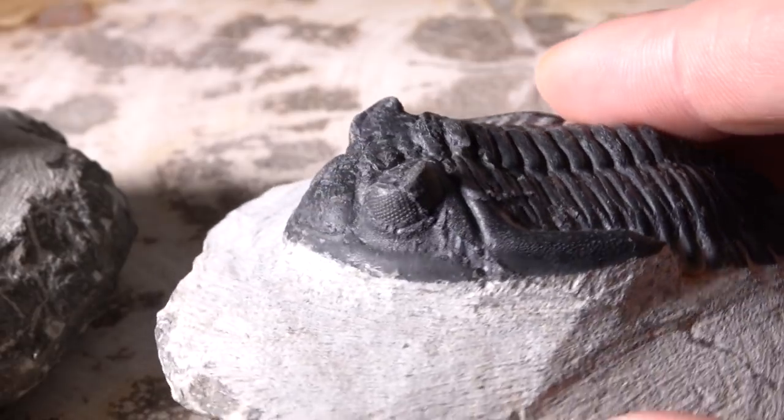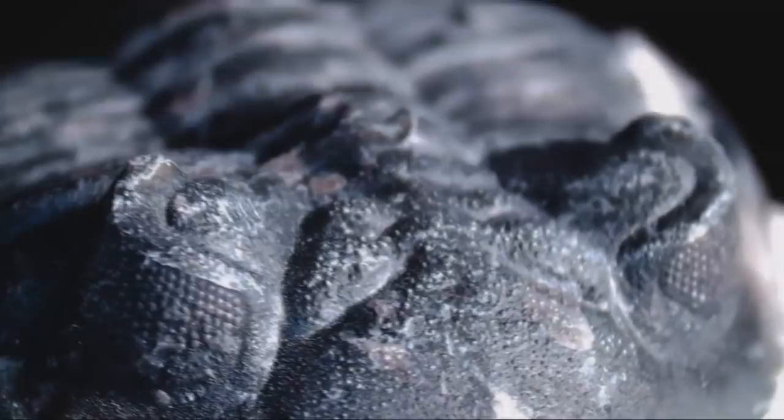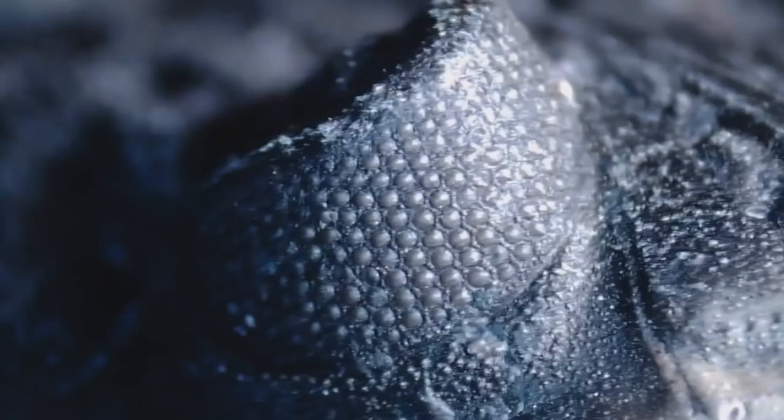So these little critters are remarkable for one thing. Their eyes were made from stone. And I don't just mean that they're currently made from stone after fossilization. Their eyes were made from stone when these creatures were alive, swimming on the ocean bottom some 400 million years ago.